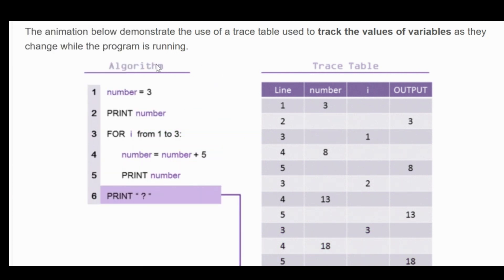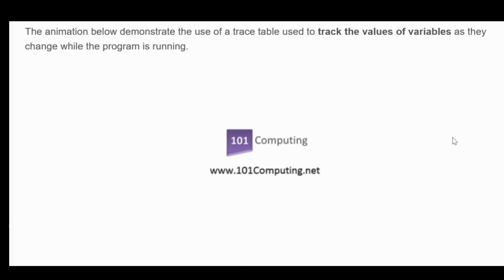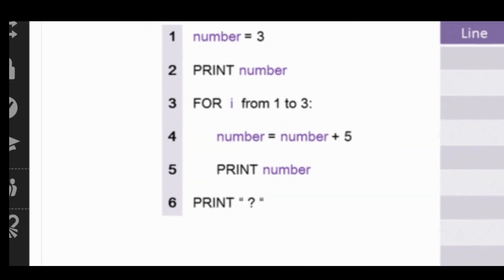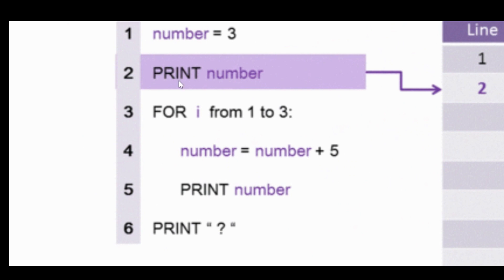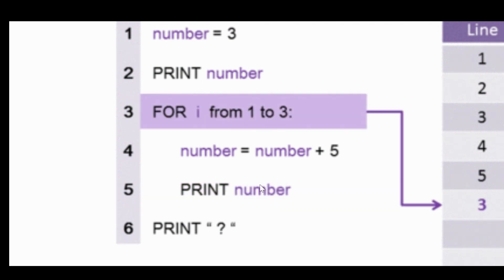So in this algorithm, let's just look at the algorithm alone, shall we? So you can see here that you've got a number which is three. You're printing the number and then from i equals one to three, you're adding five to that number and you're then printing that new number.